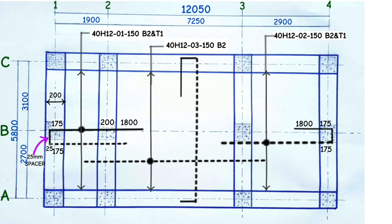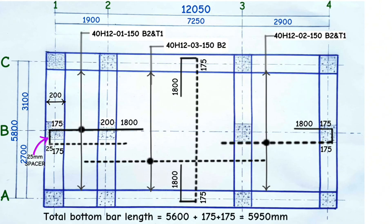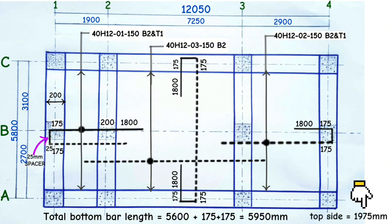The fourth steel bar shape has a thick top side and a dotted bottom side. The internal surface distance is 5.6 meters. Add 175 millimeters on one side and 175 millimeters on the other side to get a total of 5 meters 950 millimeters for the bottom bar. The top side is 175 millimeters plus 1.8 meters, giving 1 meter 975 millimeters, which we take as 2 meters. Other steel bar shapes can similarly be extracted from the main structural drawing to the bar bending schedule table.